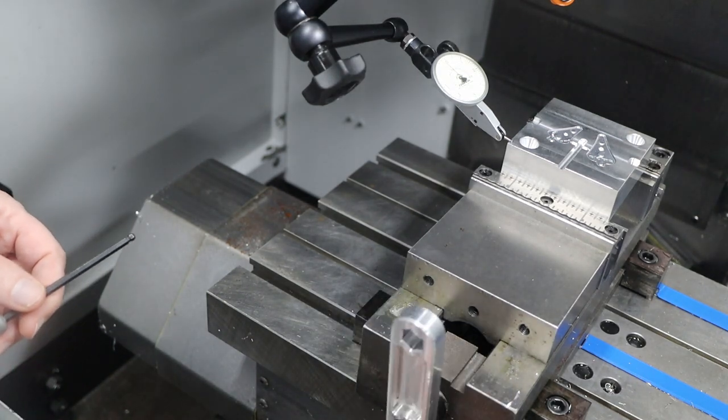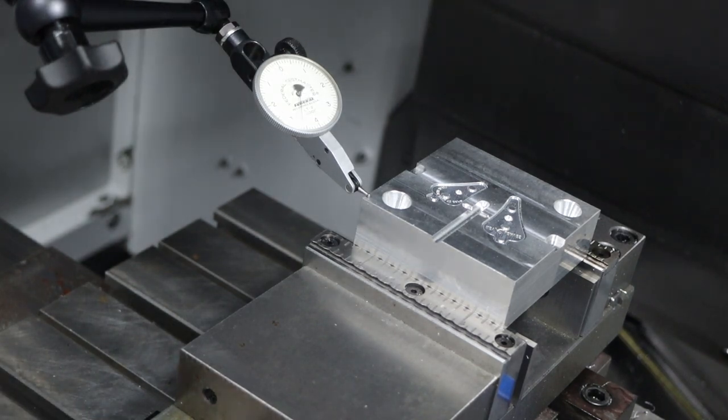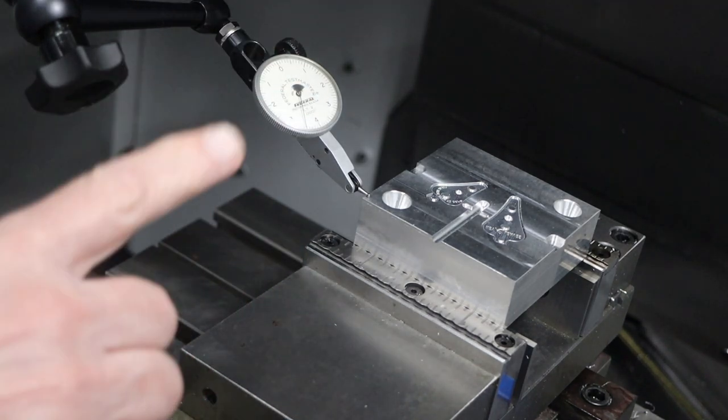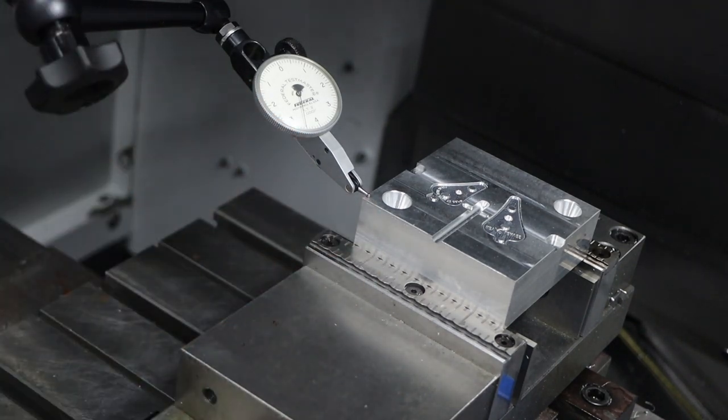Okay, now let's take a look at what the jaw lift is. I'll do the same thing, tighten the jaws again, about the same amount. And it improved quite a bit, but it's still about three and a half thousandths of an inch of rise.